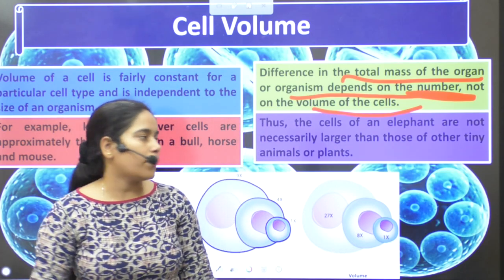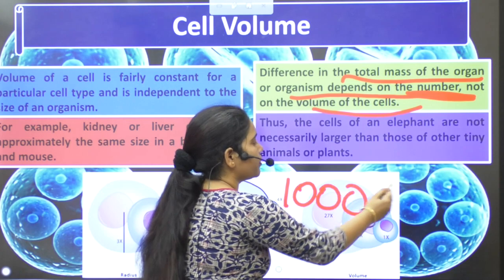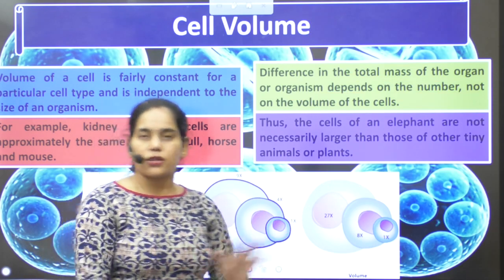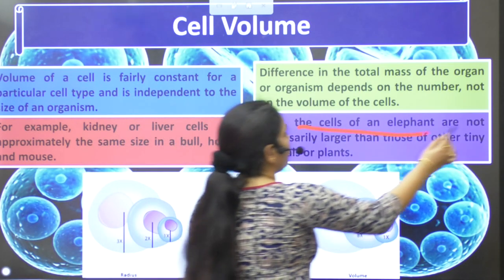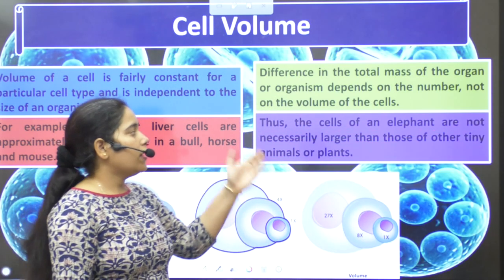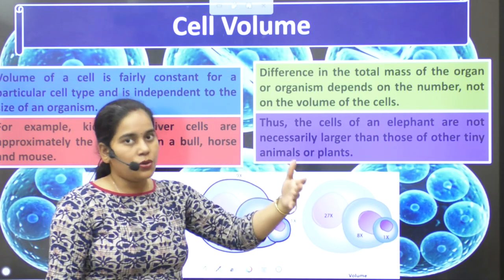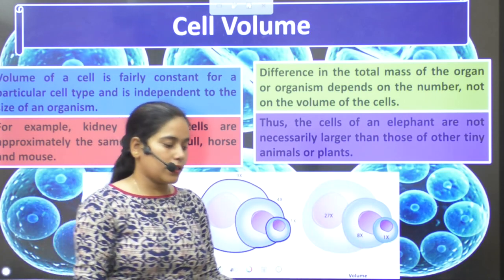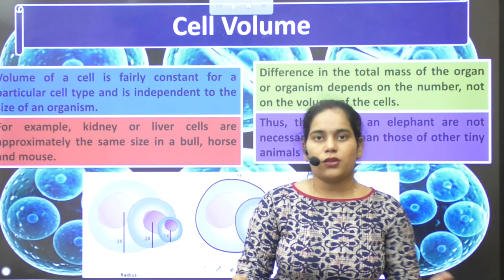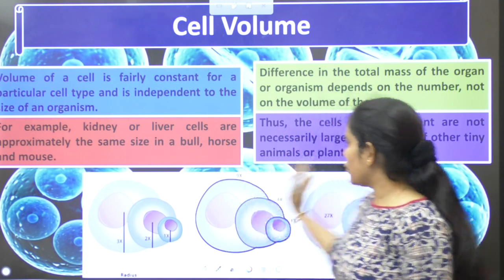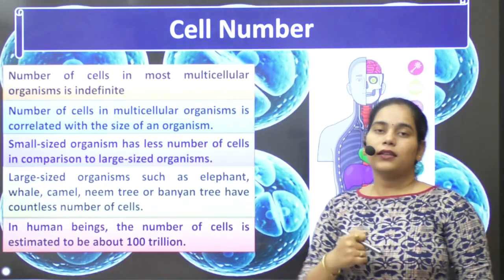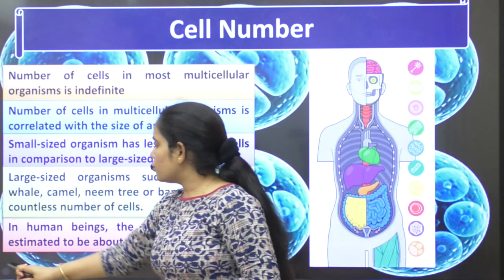Like an elephant, there will be a large number of cells — you can say hundreds of thousands of trillions. And in a mouse, there are very few cells. So the number of cells depends on the size of the organism. Thus, the cells of an elephant are not necessarily larger than those of other tiny animals or plants — they are simply greater in number.